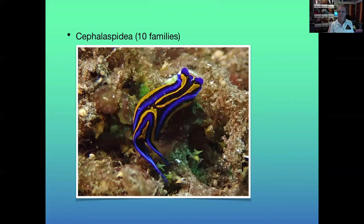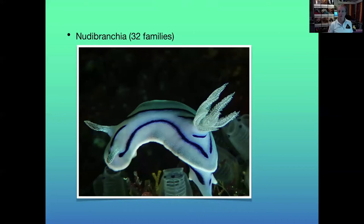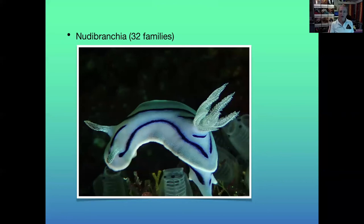The Nudibranchia are your true nudibranchs — the largest and most diverse order. Nudibranch means naked gill, so there's this really obvious gill sitting on the back — though some actually now have gills under the mantle, and in some they're completely absent, yet they're all still called Nudibranchia. They all have species-specific diets including sponges, ascidians, hydroids, anemones, soft and hard corals — and some sea slugs actually eat other sea slugs, either gradually chewing them down or just sucking them up whole.